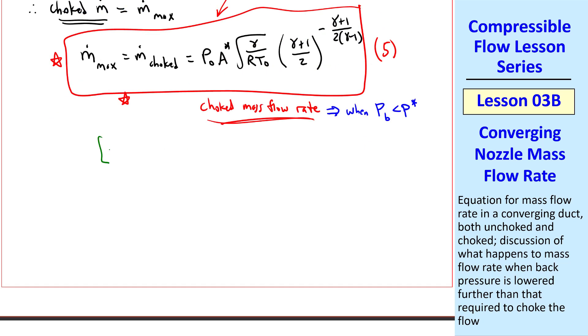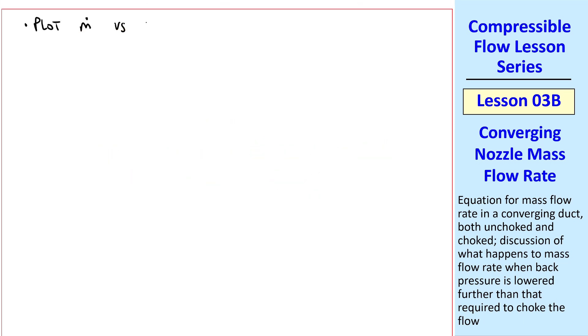And we know that we get choked flow when P_B is less than P*. And as a quick review of the previous lessons, as P_B is lowered below P*, the flow is choked, and thus mass flow rate no longer changes. It's now fixed at this maximum, or M-dot choked. Now let's plot m-dot versus the ratio P_B/P₀. I'll plot m-dot on the vertical axis and P_B/P₀ on the horizontal axis, going from 0 to 1. We'll look at five cases.